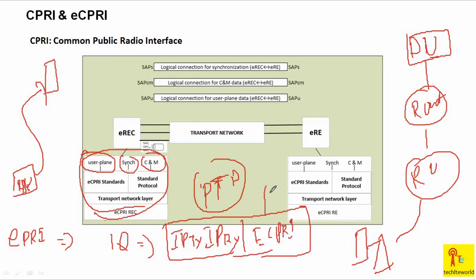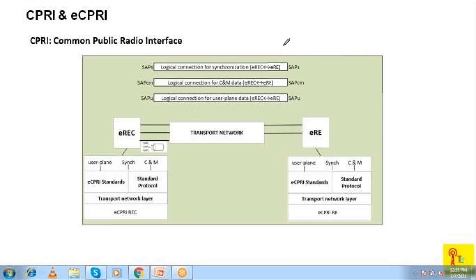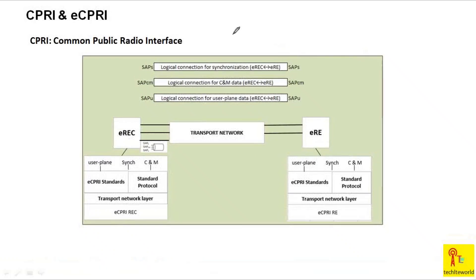If using internet protocol, we make a packet with the IP address of the transmitter and the IP address of the receiver, and put the eCPRI data inside. We can send this data over internet protocol via fiber cable or any other medium. That is all about eCPRI and CPRI.